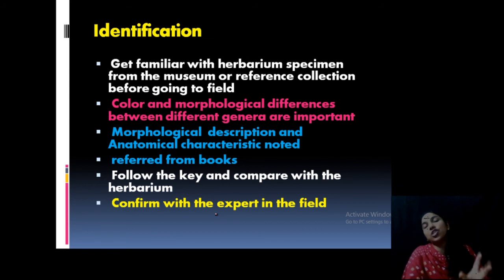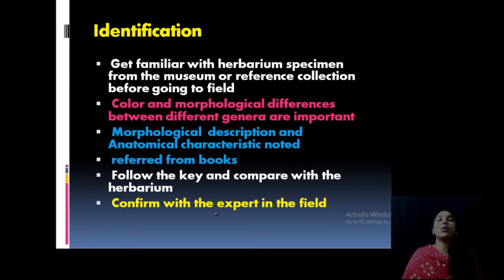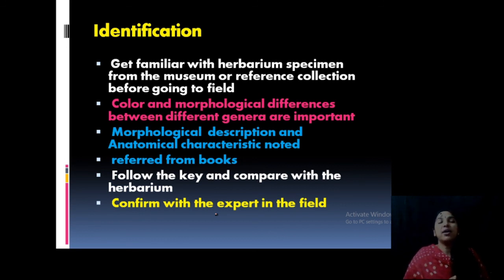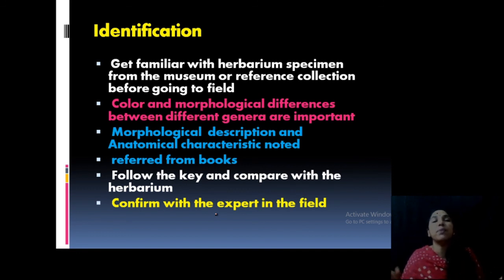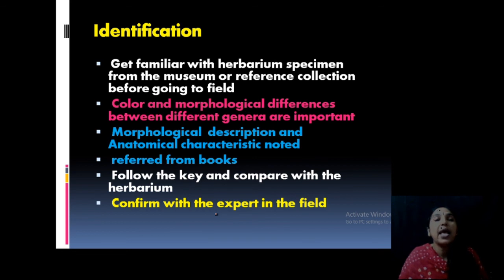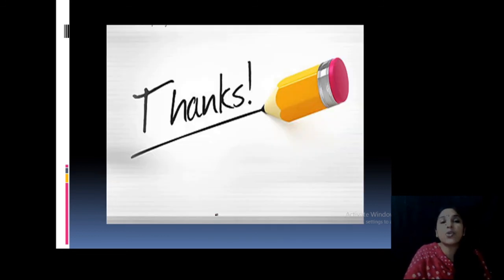The last step is identification. The process is: collection, preservation, staining, herbarium, and now identification. While collecting, you have to note all the features — morphological, anatomical, everything. Based on description, you can refer to certain monographs. For example, Cyanophyceae has a monograph prepared by the algologist Desikachary. Fritz also wrote a three-volume book. Many scientists have written various reference books, and you can refer to those and identify the algae. You can prepare a key for easy identification, compare specimens, and if in doubt, confirm with experts.